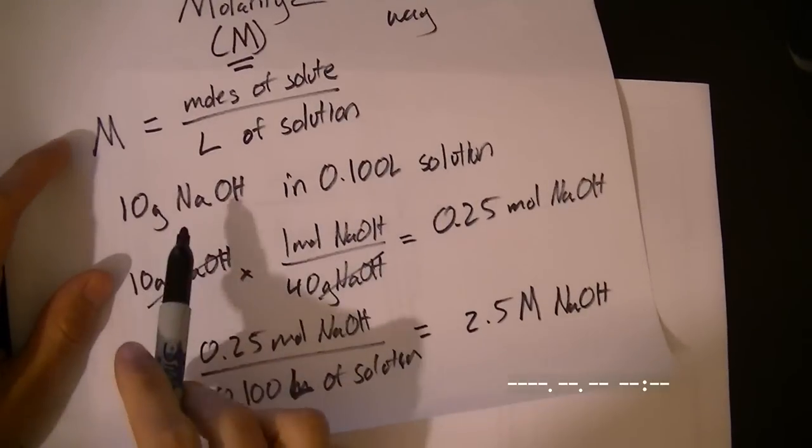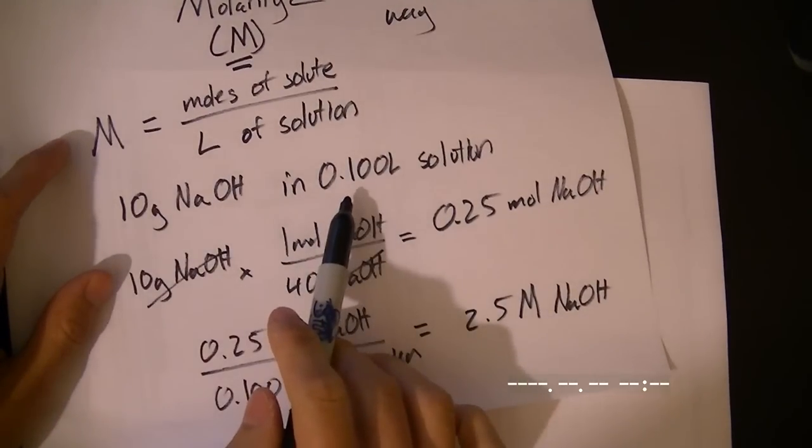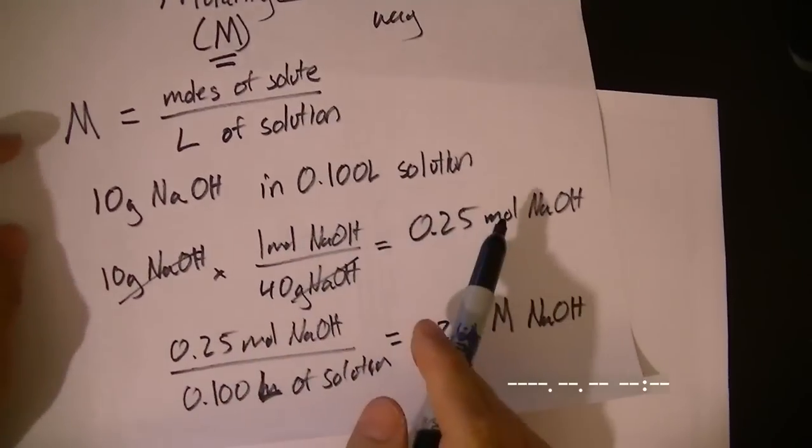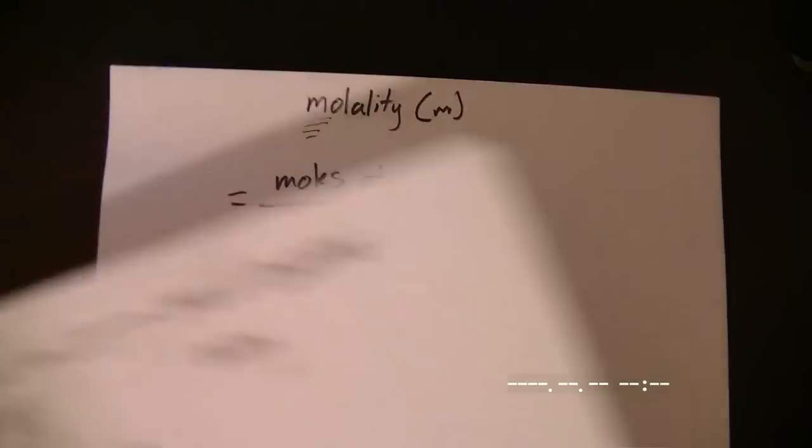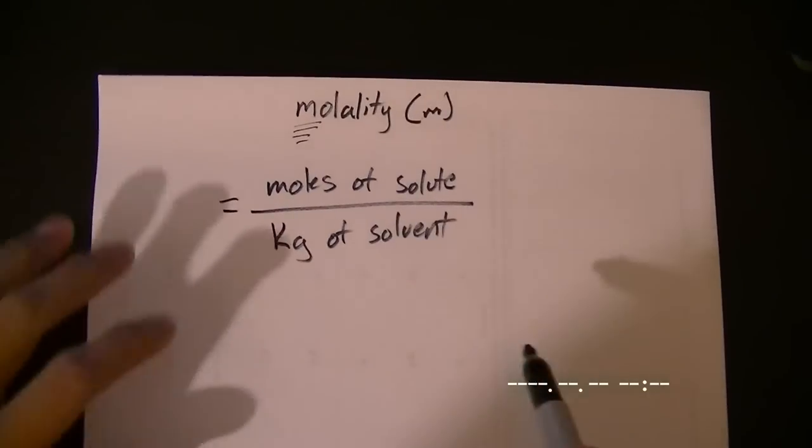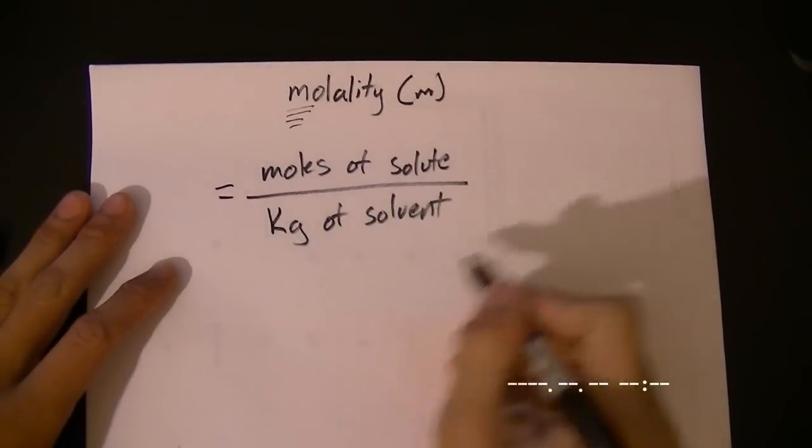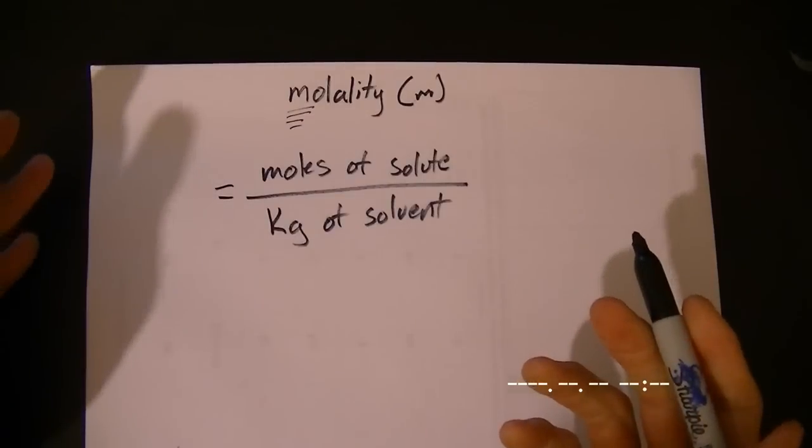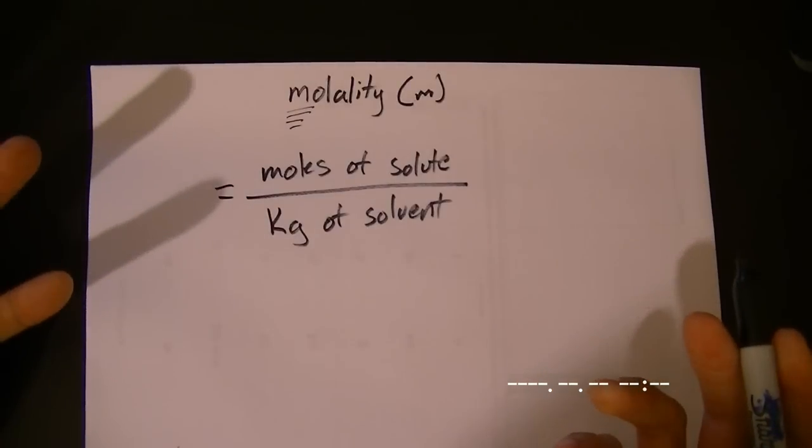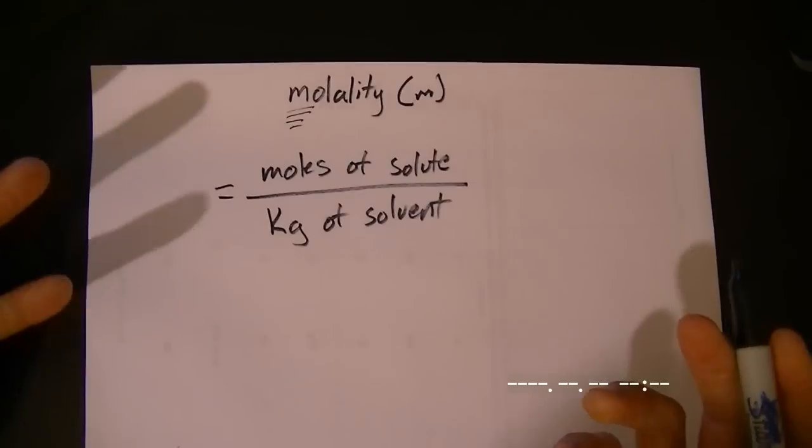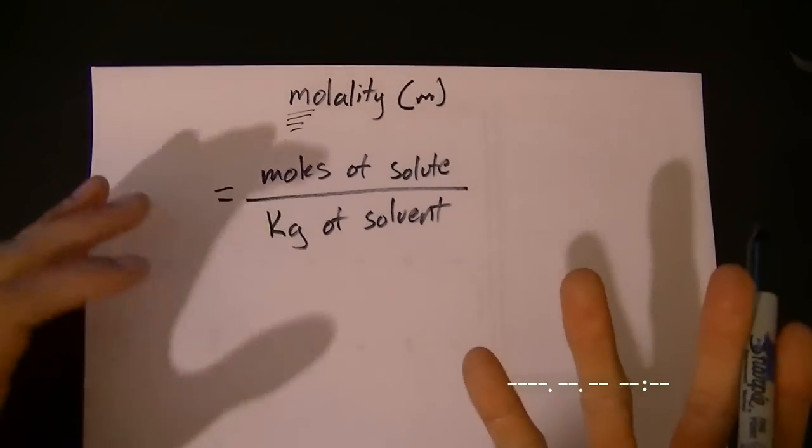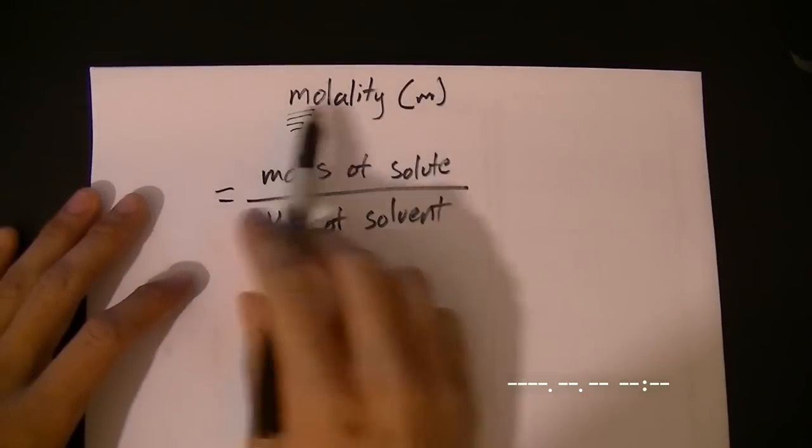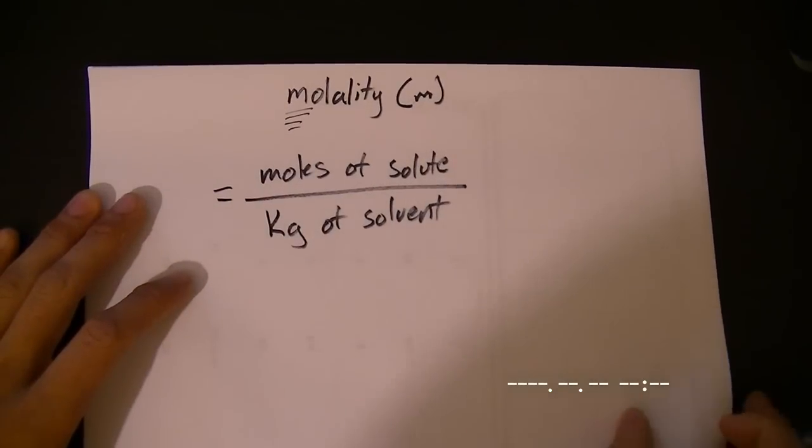And it's pretty simple. I'm not going to do a practice problem for this. Basically, if we had the same example, we would just say 0.1 kilograms of solution. It's just another way of measuring the concentration. And in this case, let's say if we had a solid and it was really difficult to measure the volume of the solid, we can use kilograms, measure it in terms of weight, and get our molality from that.